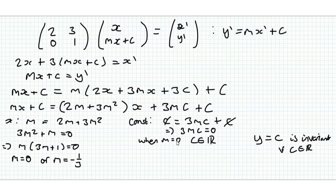So, next thing to consider is when m is equal to minus 1 third, and that implies that c is equal to 0, because if we have 3 times minus 1 third, well the only thing that makes this equation 0 is if c is 0. So that means the line y is equal to minus 1 third x is invariant.